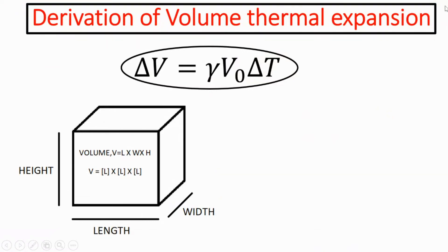In this video, we are going to derive the expression for volume thermal expansion. The expression for volume thermal expansion is delta V equal to gamma V0 delta T. To derive this equation, we are going to use the equation of linear thermal expansion: delta L equal to alpha L0 delta T.